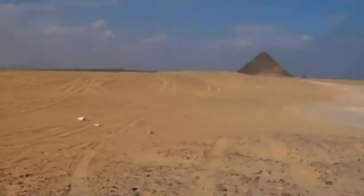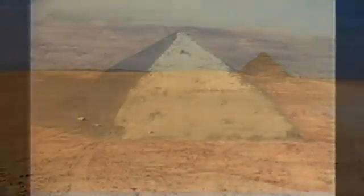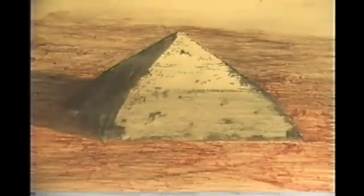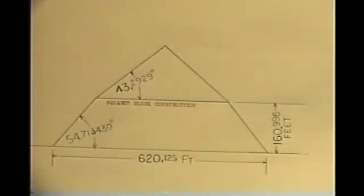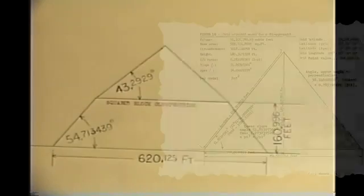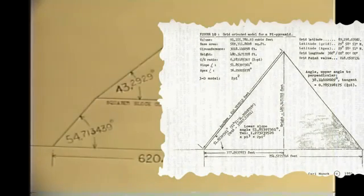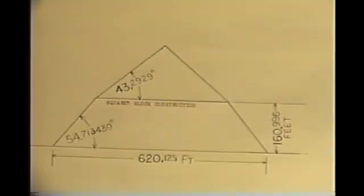Egyptologists are not going to want to hear this, but Seneferu's engineers knew exactly what they were doing. True, the lower slope angle at 54.7 degrees was a few degrees steeper than Giza's Great Pyramid, but it posed no risk of collapse. Angle and weight were no problem.